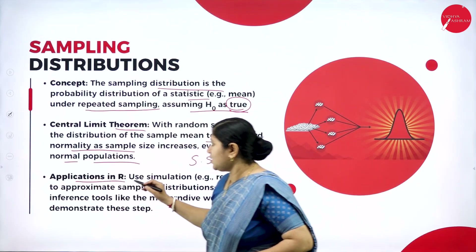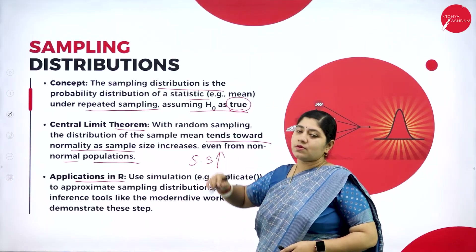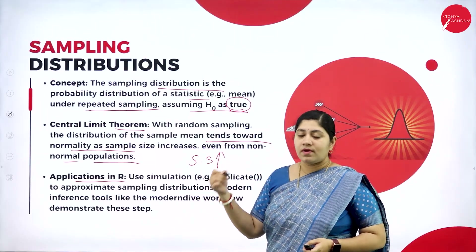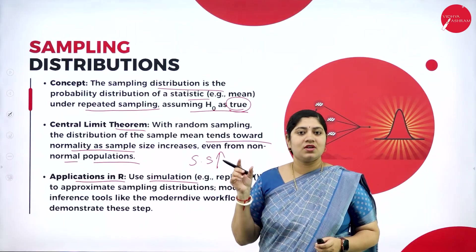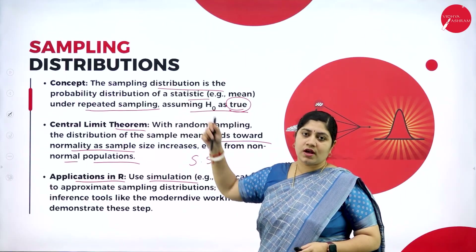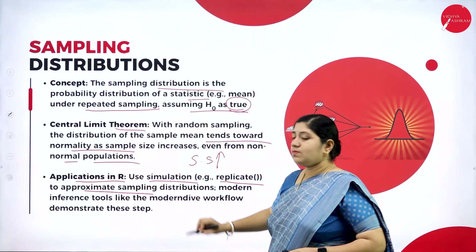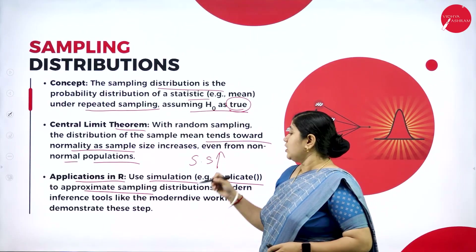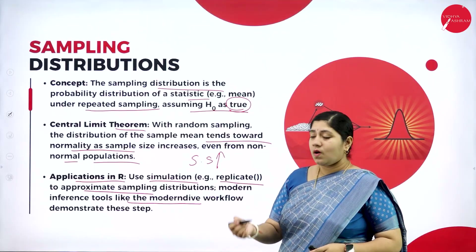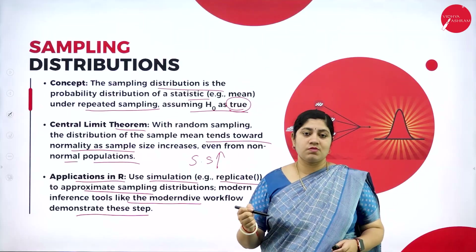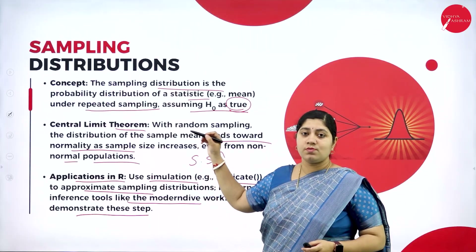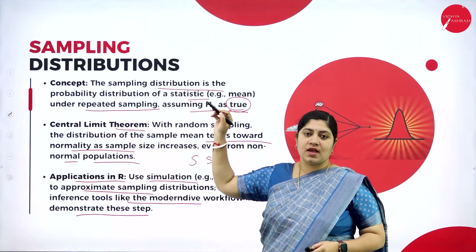The main application of sampling distribution in R is that it is used to represent simulations using the important keyword 'replicate'. Through that, we can approximate the sampling distribution. It is also used in modern inference to deal with tools like modern workflow or to demonstrate the different steps included in our testing patterns.